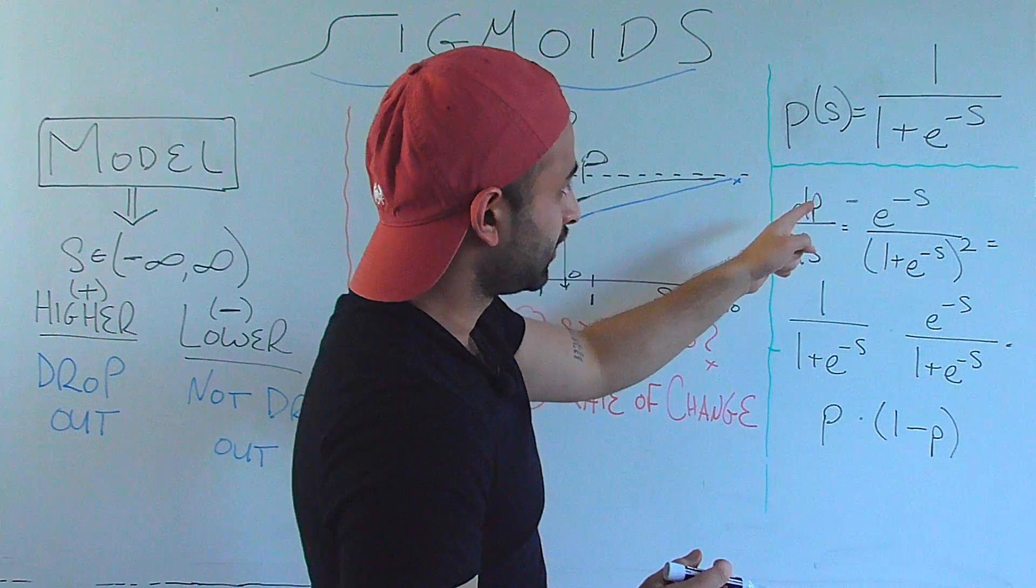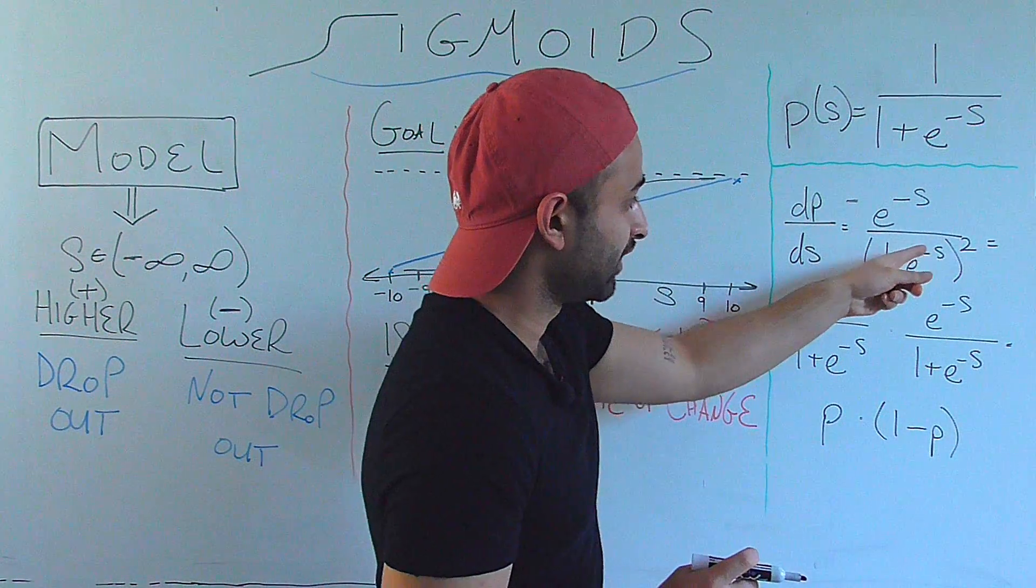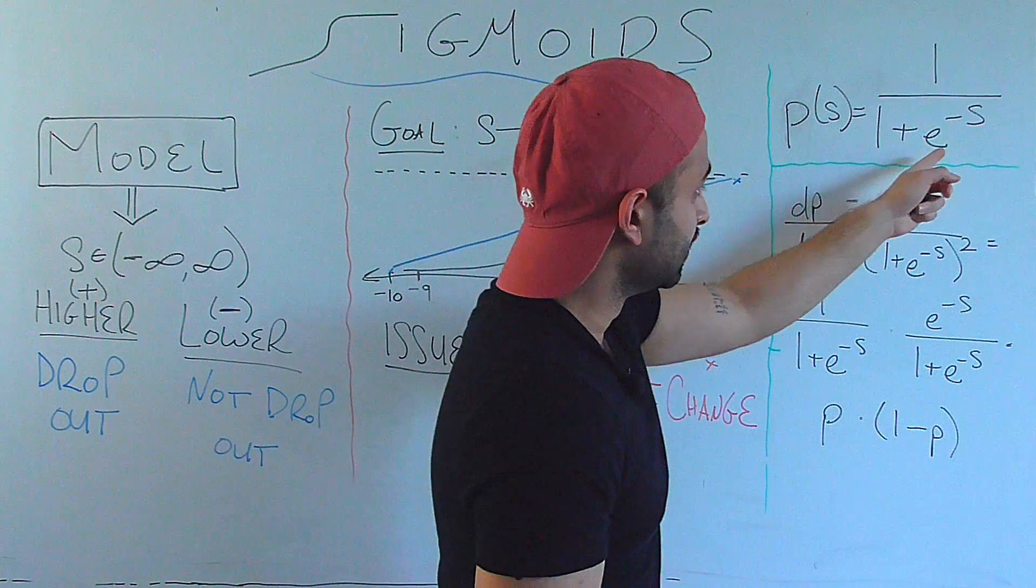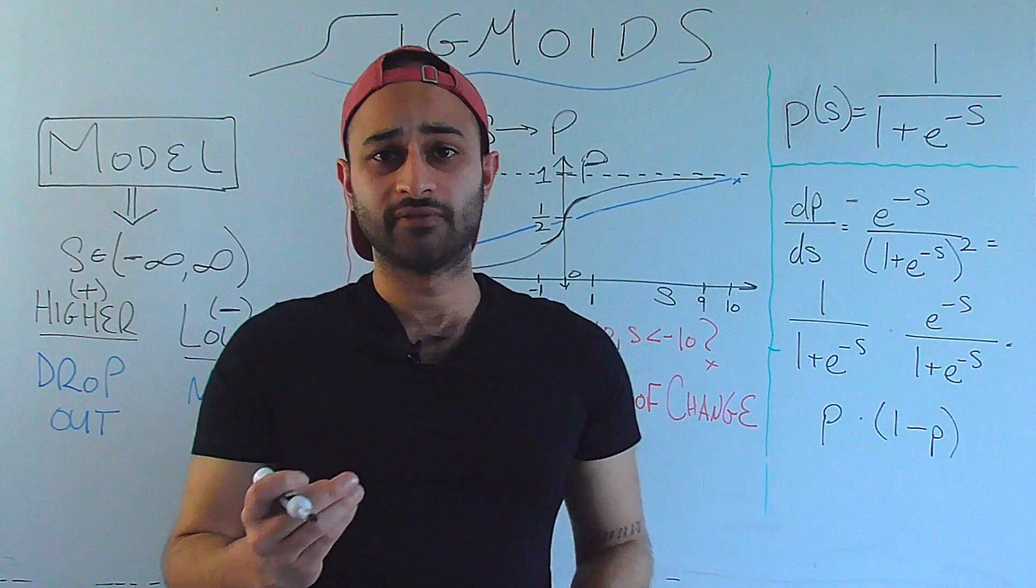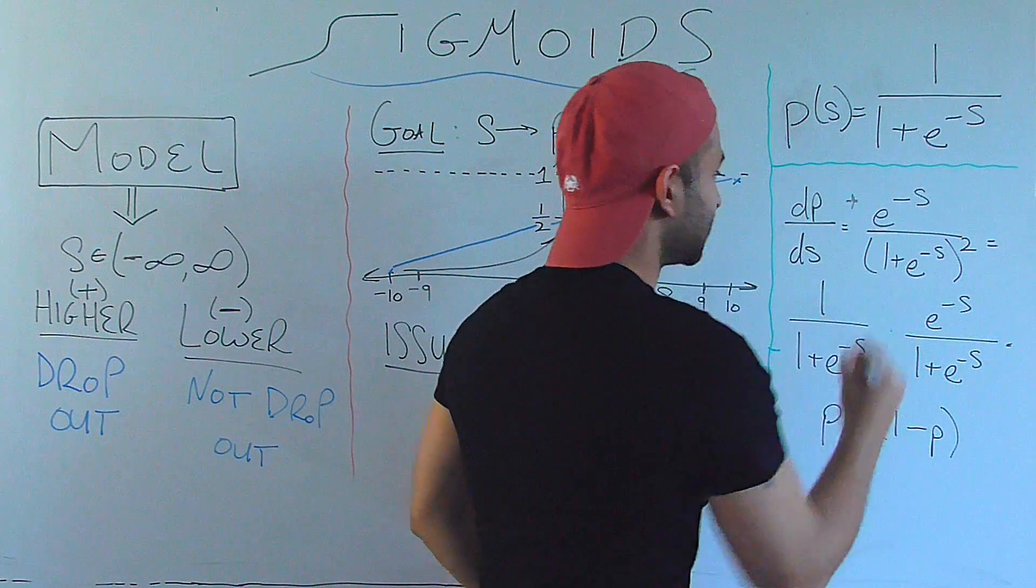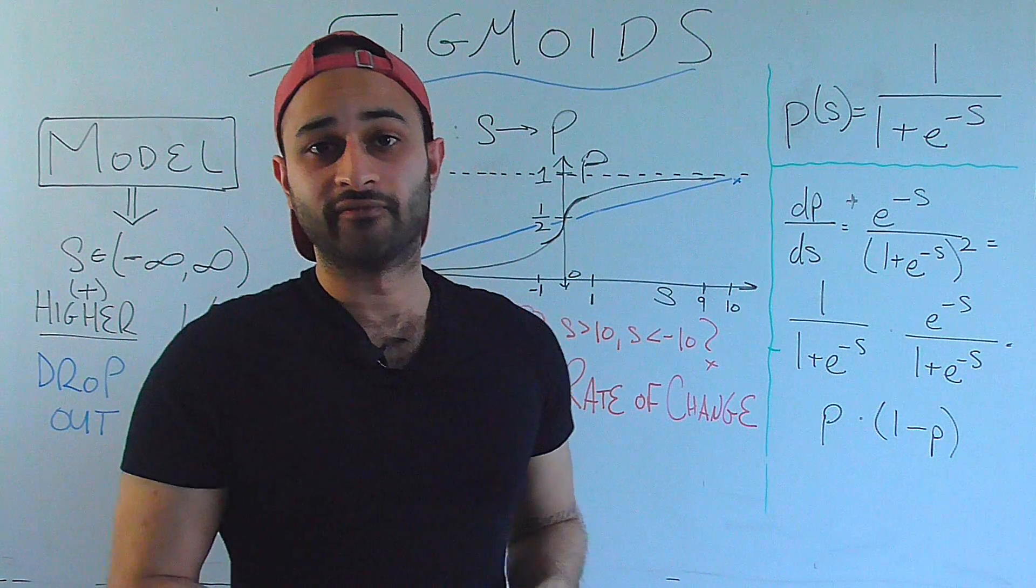The negative 1 comes in the front, then we put a power of negative 2, so that is why we get 1 plus e to the negative x squared. We use chain rule to take the derivative of the lower part, which gives us e to the negative s, and of course the negative s is why we end up with a positive sign in the front. So this is the derivative, the first derivative of the sigmoid.